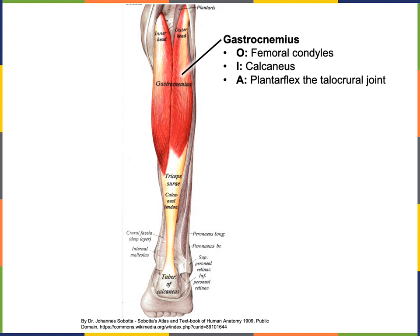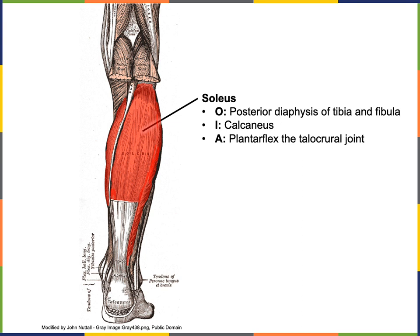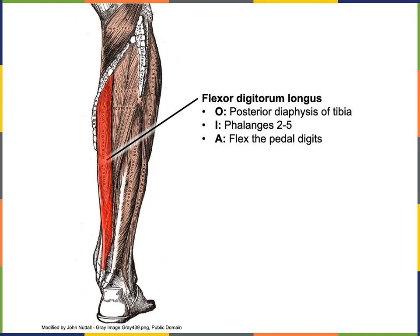The origin of gastrocnemius is the femoral condyles — the medial head from the medial femoral condyle and the lateral head from the lateral femoral condyle — with insertion onto the calcaneus and action of plantar flexion at the talocrural joint. The origin of soleus is the posterior diaphysis of the tibia and fibula; it shares insertion onto the calcaneus with gastrocnemius for plantar flexion. The origin of flexor digitorum longus is the posterior diaphysis of the tibia; insertion is onto phalanges of digits two through five; and its action is flexion of pedal digits two through five.